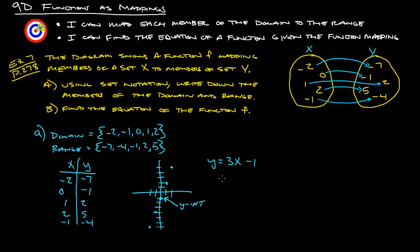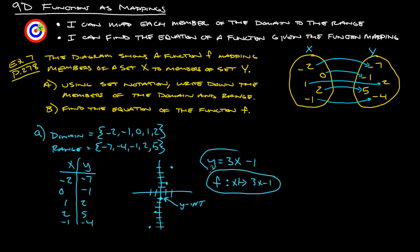If we're going to get really technical, we can write it in function notation: the function such that x is converted into 3x minus 1. But y equals 3x minus 1 is just fine too — you'll probably see it written like that in the back of the book.